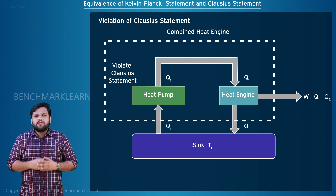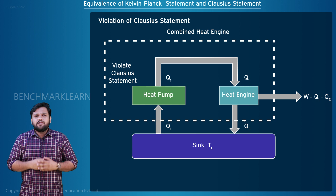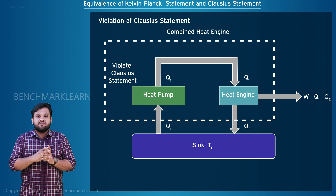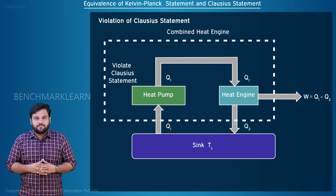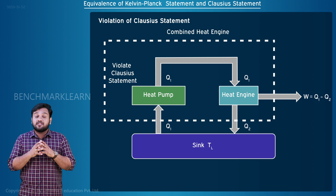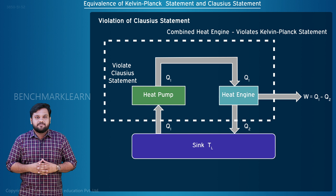According to the Kelvin-Planck Statement, a heat engine must exchange heat with a hot reservoir as well as a cold reservoir to operate continuously. Here we have interaction with only one reservoir — that is, the cold reservoir. This means the Kelvin-Planck Statement is violated. The violation of the Clausius Statement has led to the violation of the Kelvin-Planck Statement.